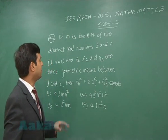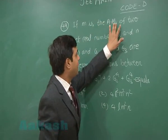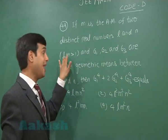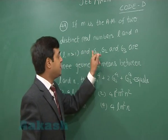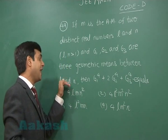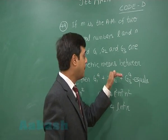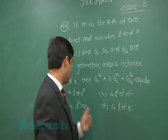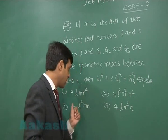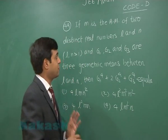Let's go to the 49th question of JEE Main 2015 Code D paper. If M is the arithmetic mean of two distinct real numbers L and N where L and N are greater than 1, and G1, G2, and G3 are three geometric means between L and N, then G1⁴ + 2G2⁴ + G3⁴ equals: 4LMN², 4L²M²N², 4L²MN, or 4LM²N.